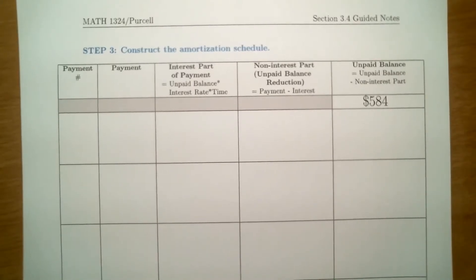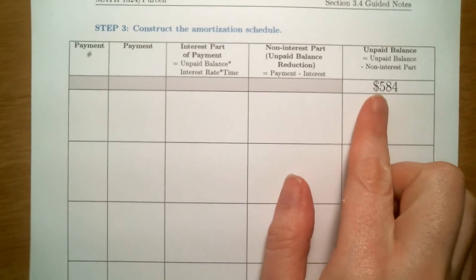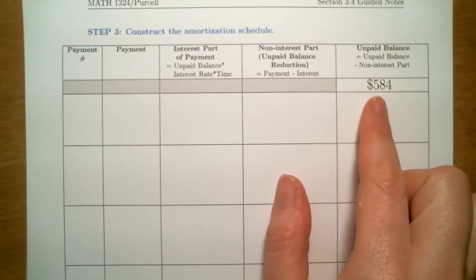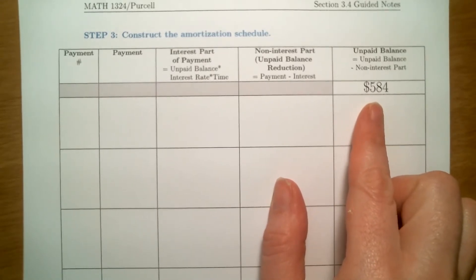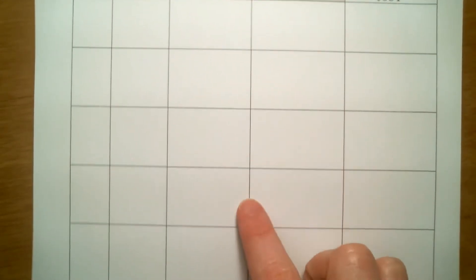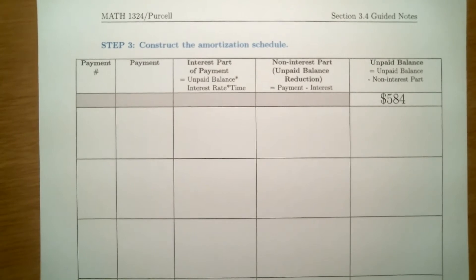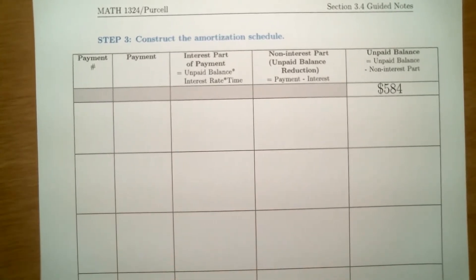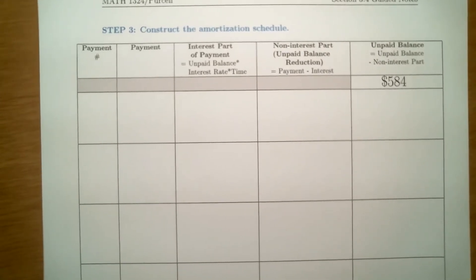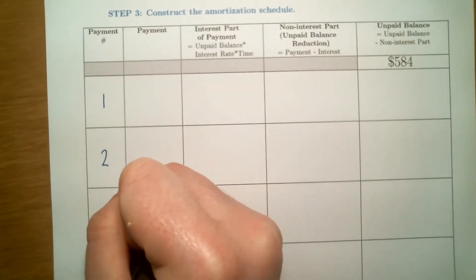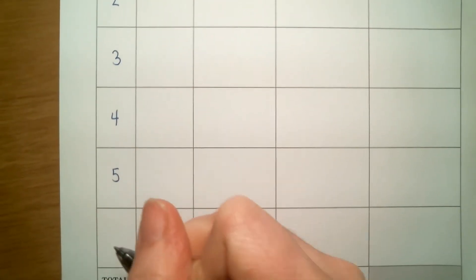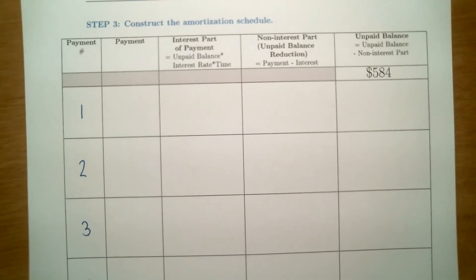Let's check it out on page three — I have this huge table mapped out so that once we fill it in we will have the amortization schedule. In the top right corner I've got our starting balance; we're buying the washing machine for $584. There are six rows here, each mapping out how a payment is handled. The first column is for the payment number, and we're going to make six payments to pay off this washing machine.